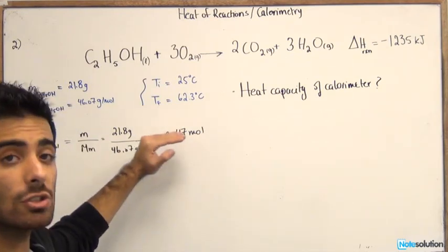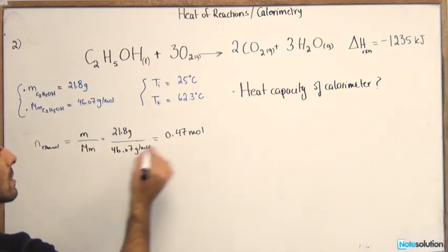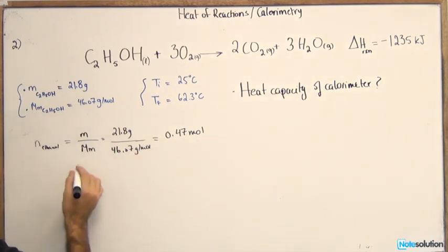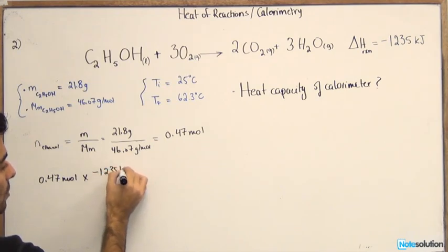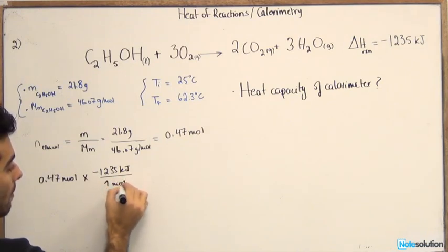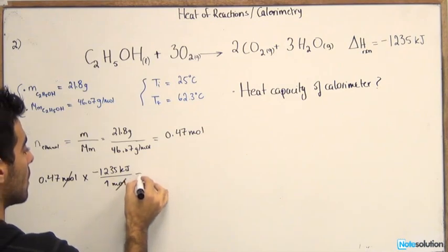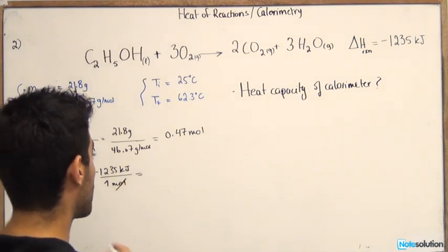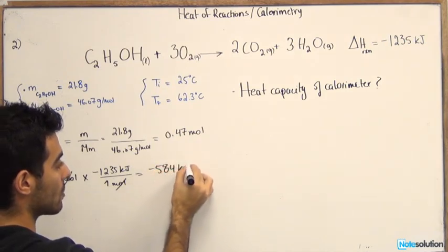So to do that we're going to do 0.47 mole times negative 1,235 kilojoules, and remember this is per one mole of ethanol. So one mole at the bottom. The mole cancels off with the mole, and if you do the proper calculation you should end up with negative 584 kilojoules.